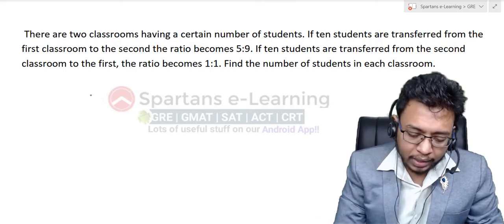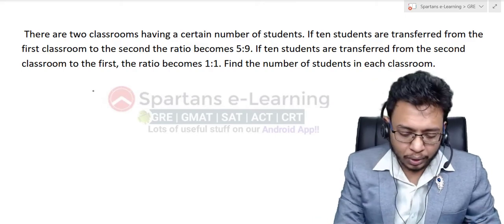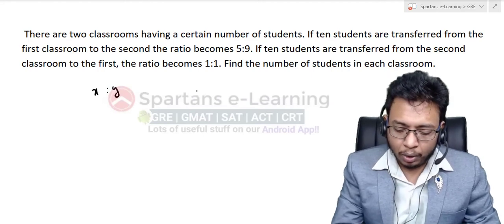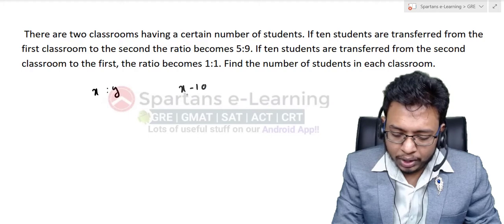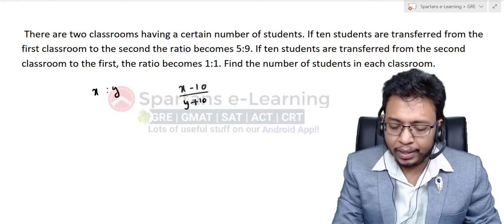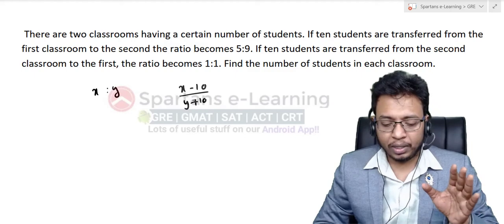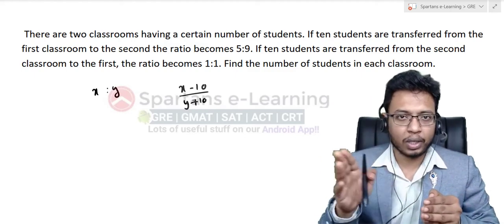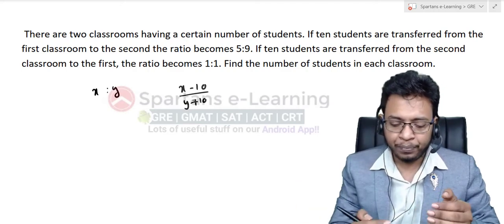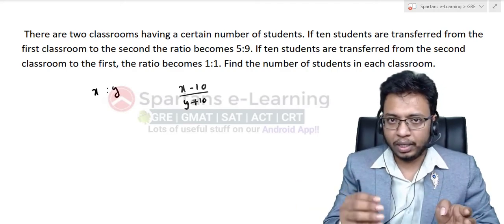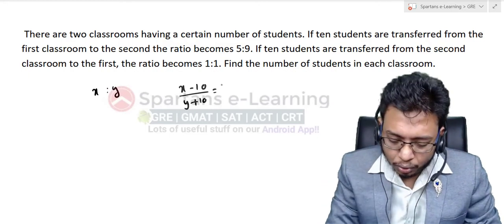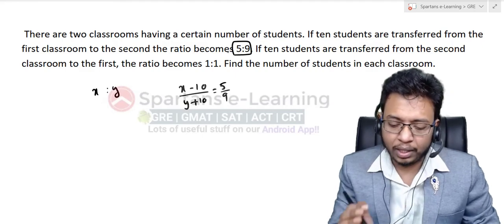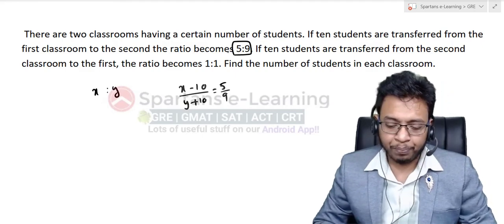Let's assume there are x students in the first class and y students in the second class. From the first class, 10 people are transferred to the second class — so the first class becomes x minus 10, and the second class becomes y plus 10. This ratio is given as 5 to 9.